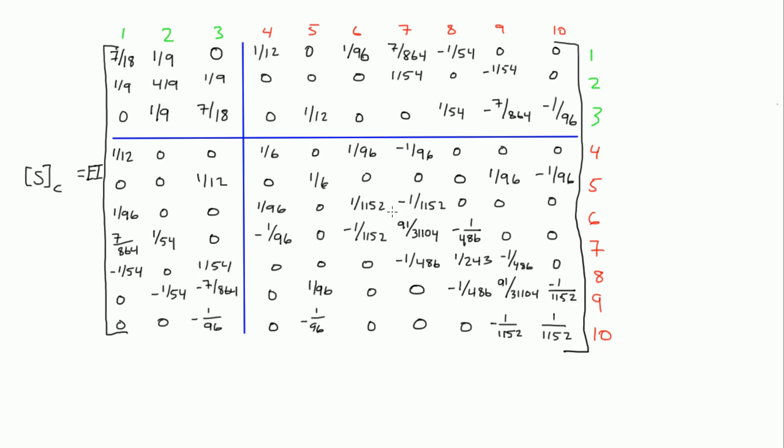Alright, welcome back. In the last video, we started constructing the S-sub-complete matrix, and we divided it into four parts. This matrix right here is the S-sub-UU (unrestrained, unrestrained). This one here is the S-sub-unrestrained, restrained. This one here is the S-sub-restrained, unrestrained. And this one here is the S-sub-restrained, restrained.